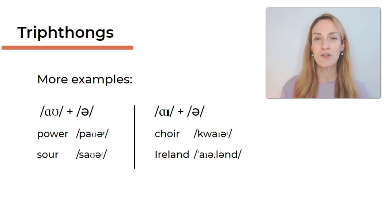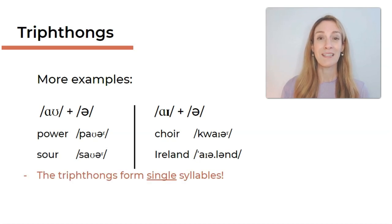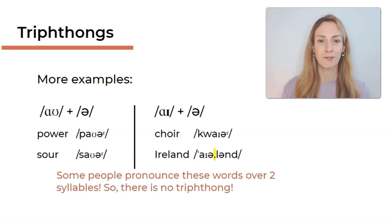Now there's something important to remember, and I know that there will be a lot of questions probably under this video. And some of you will say, wait a second, when I say those words they have two syllables. Well yes, in general, triphthongs first of all form single syllables, so this is always the case. We can only really have a triphthong in a single syllable. However, there are some people who pronounce these words over two syllables.